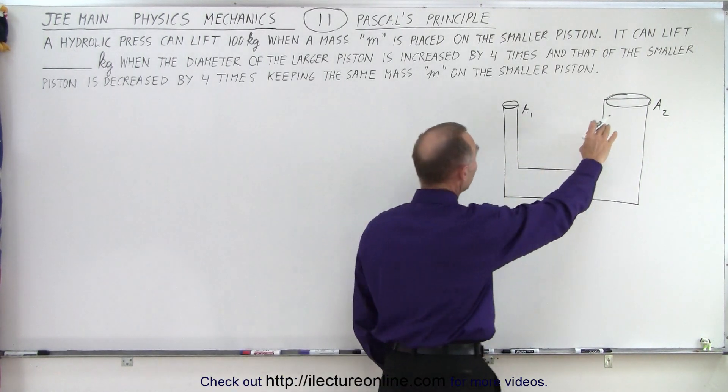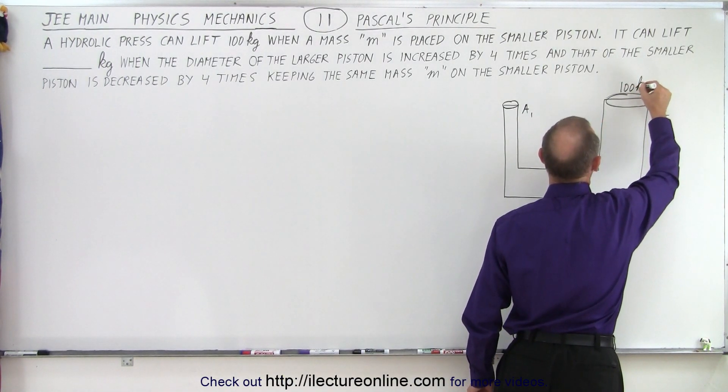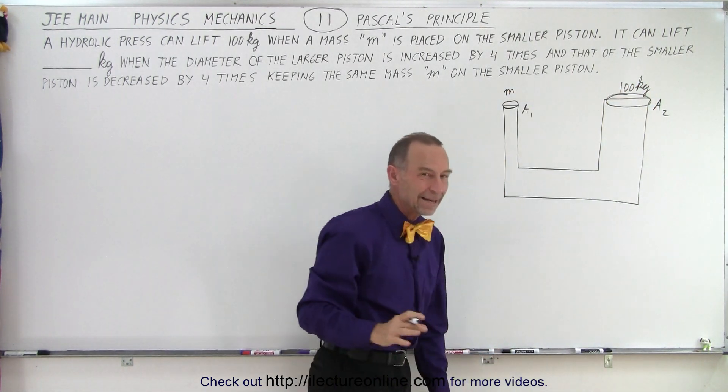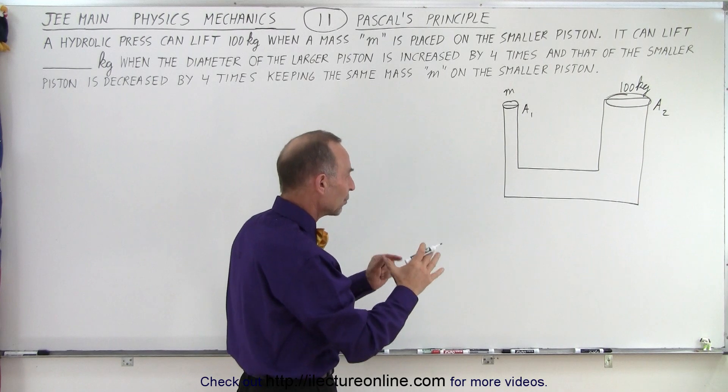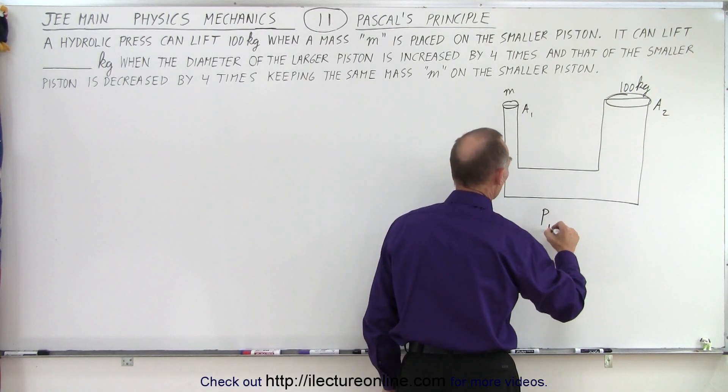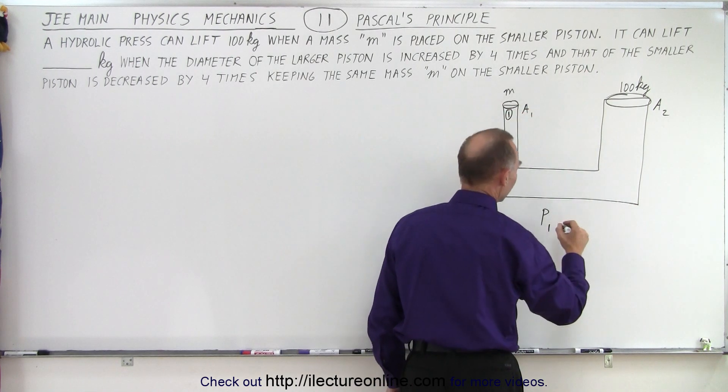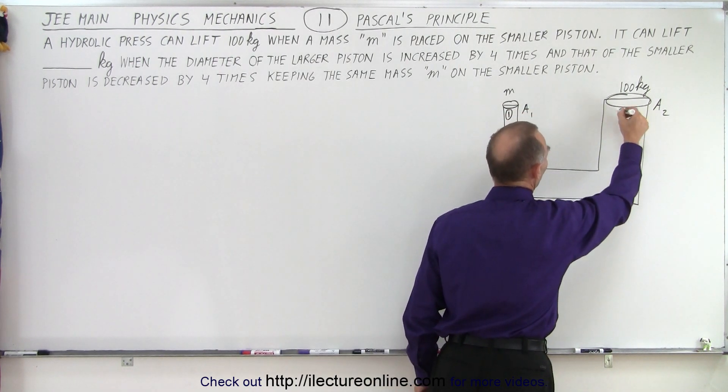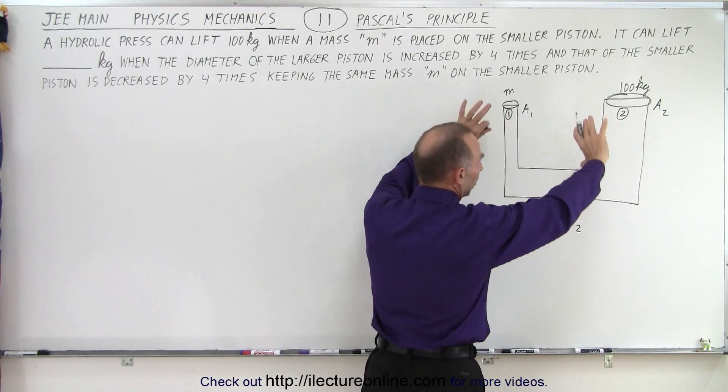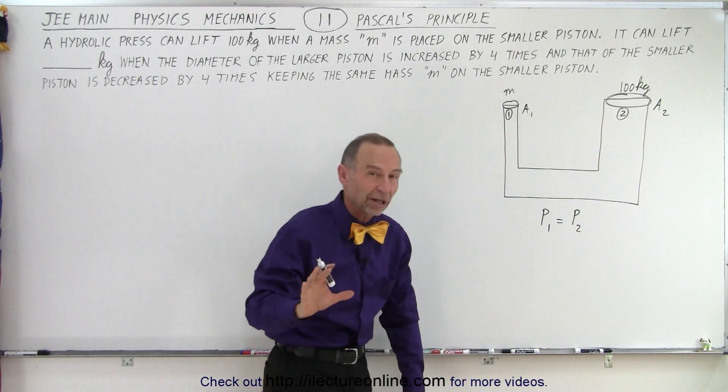Now on the larger piston, they put 100 kilograms, and on the smaller piston, they put M. And so the principle, and that's always the key, right, is to understand the principle. The principle is that the pressure at one, right here, must equal the pressure at two. And that is what we call Pascal's principle. When there's pressure put on a fluid, the pressure distributes evenly everywhere throughout the fluid.